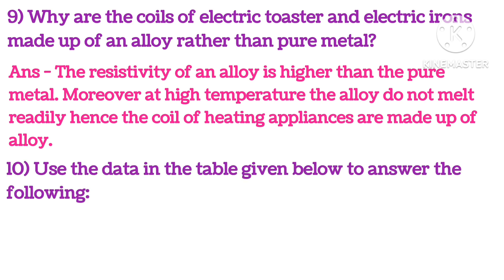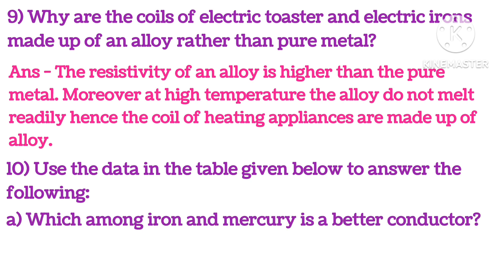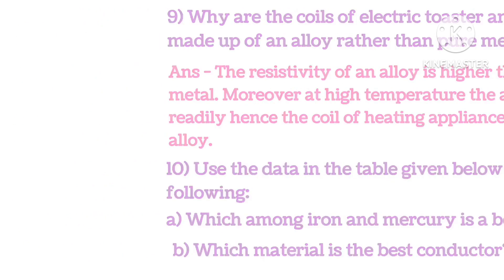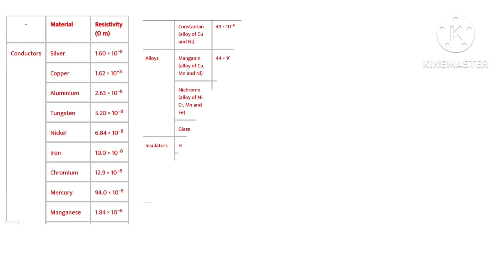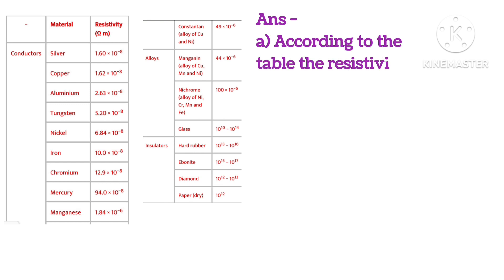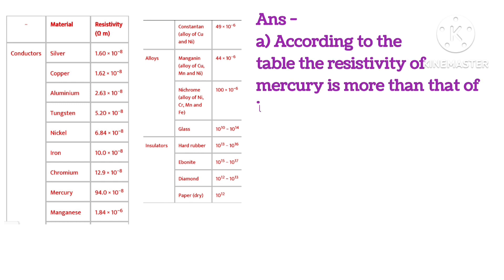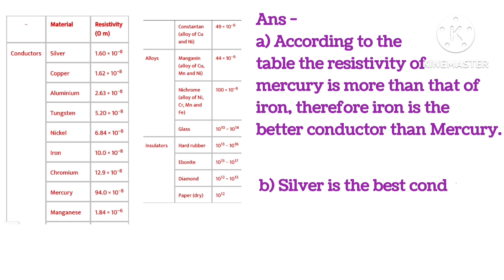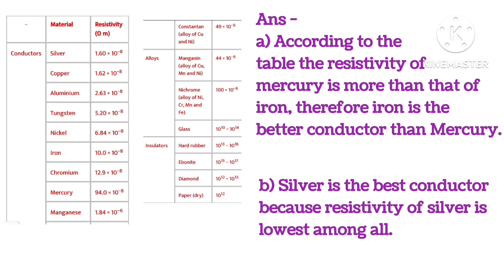Use the data in the table to answer: which among iron and mercury is the better conductor? According to the table, the resistivity of mercury is more than that of iron. Therefore, iron is the better conductor than mercury. Silver is the best conductor among all, because the resistivity of silver is the lowest.